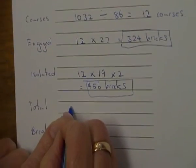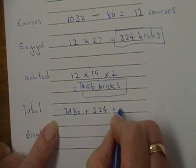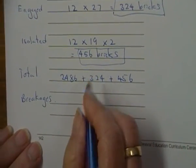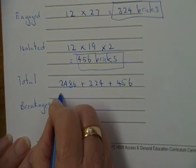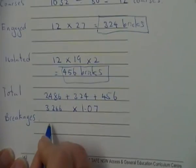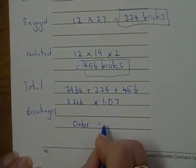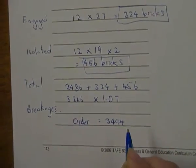Okay, so now we're going to add them. So we've got the wall at 2486 plus 324 plus 456. When we add them we're going to get 3266 bricks. And then we've got a wastage of 7%, 1.07. So then our order is going to be about 3494 or 95 bricks, just depending where you round it up.